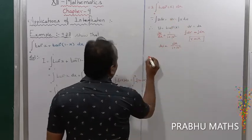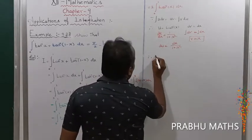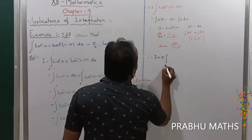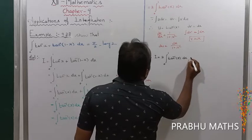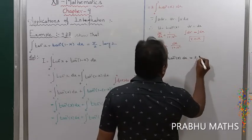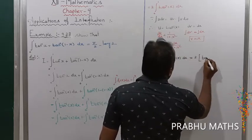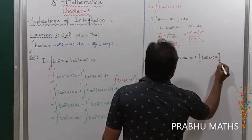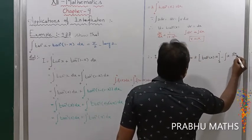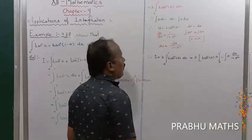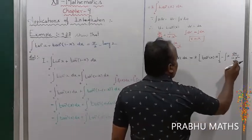Therefore, I equals 2 into integral of 0 to 1 of tan inverse of x into dx. Applying the formula, the first part is u·v: tan inverse of x into x, with limits 0 to 1; minus integral of v du, which is x into dx divided by (1 plus x squared). So du is replaced by dx divided by (1 plus x squared).